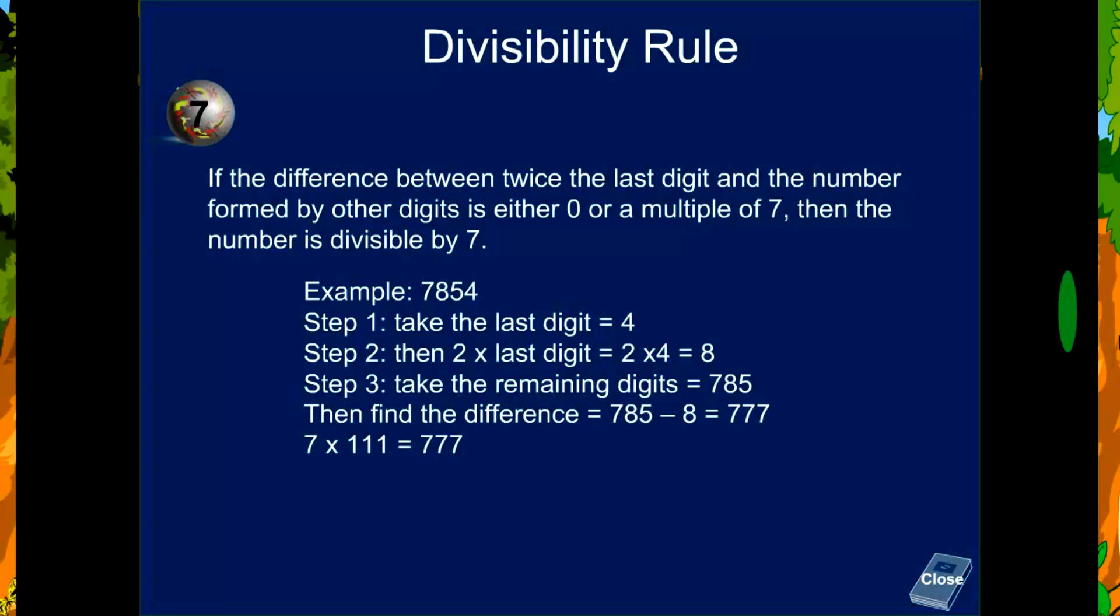7 times 111 equals 777. So 777 is a multiple of 7. Therefore, 7854 is divisible by 7.